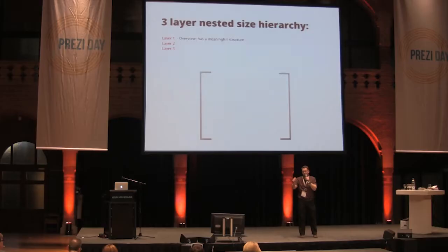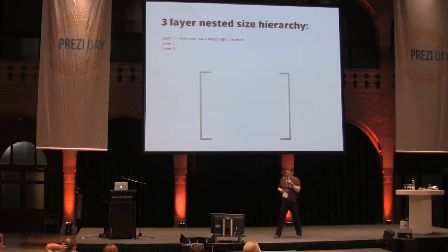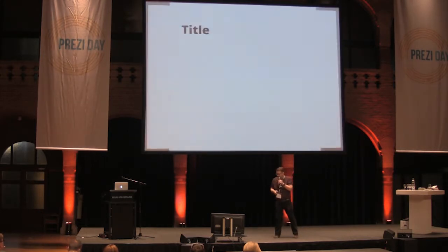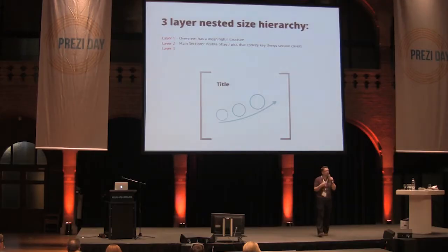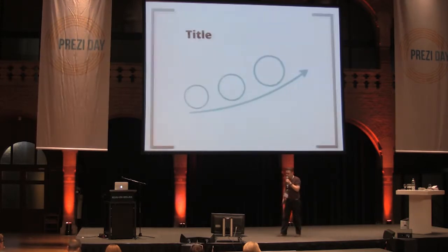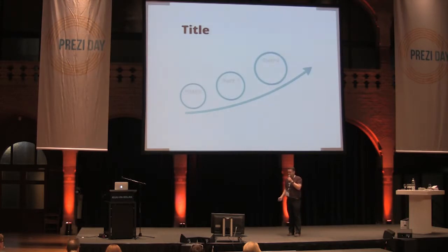That top layer — Russell talks a lot about three layers of creating a Prezi, and I think that's a great way to think about it — layer one is your overview, and that should have a meaningful structure. Something like I've tried to achieve here: the title is always important, and then just a shape so we can see we're advancing from left to right and improving as we go along. That second layer should show you all the main sections — intro, conclusion, points in between — and they should be visible, helping your audience see all the points of your Prezi.